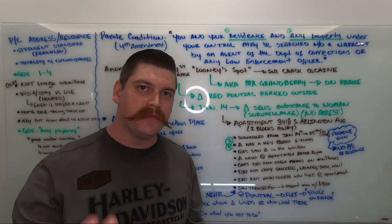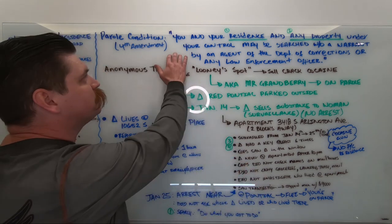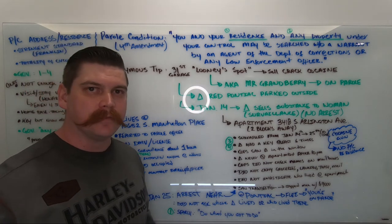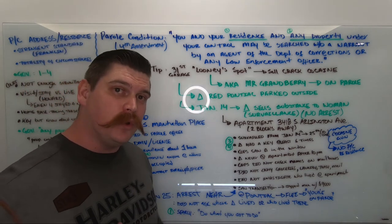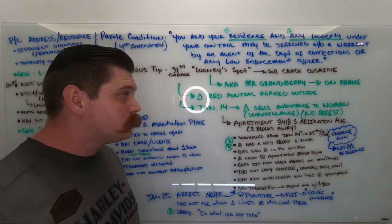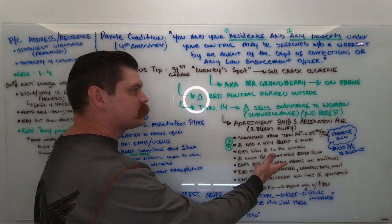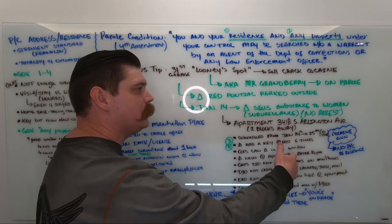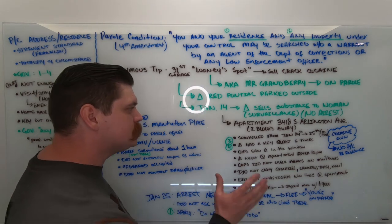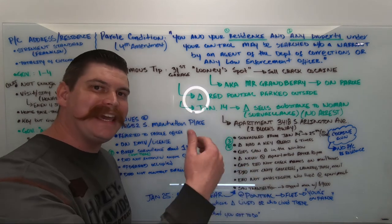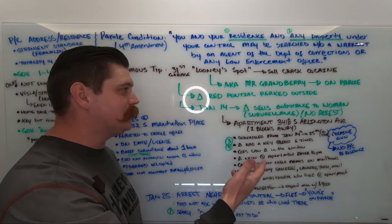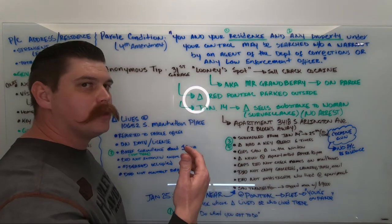So when we first started the video, it seemed like this provision was very broad and it would include the apartment at 3418 Arlington Avenue. But by the end of reading this case, United States v. Granbury, we learned that Mr. Granbury was actually successful in suppressing the gun and cocaine as fruits of the poisonous tree. Because the search was illegal, the government cannot use the drugs and the gun that was found at Arlington Avenue against Mr. Granbury.